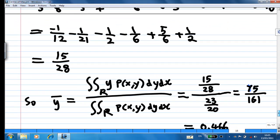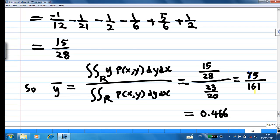You find that this integral gives you 15 out of 28. So the value of ȳ is 75 over 161, so ȳ is equal to 0.466. And this x̄ and ȳ will give you the location of the center of mass. This is the end of the recording.